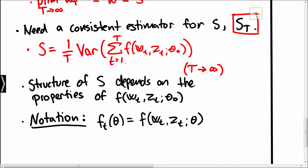We will start out by a simple case where the function F is not correlated over time, which gives a fairly nice structure of the matrix S, meaning that we can come up with a fairly nice estimator for S.